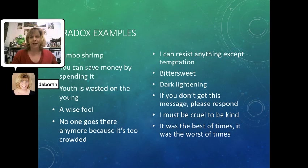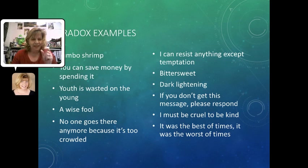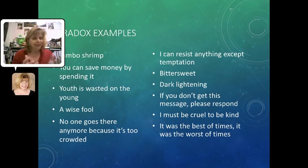You see paradoxes around you all the time and you probably hear people say them. Some of these are famous quotes — some of them are from Shakespeare, as a matter of fact. When we say things like "jumbo shrimp" — shrimp by definition is something really small, so how can it be jumbo? But what we're saying is that out of all the shrimp, these are the biggest of the smallest. You can save money by spending it. Youth is wasted on the young. A wise fool.